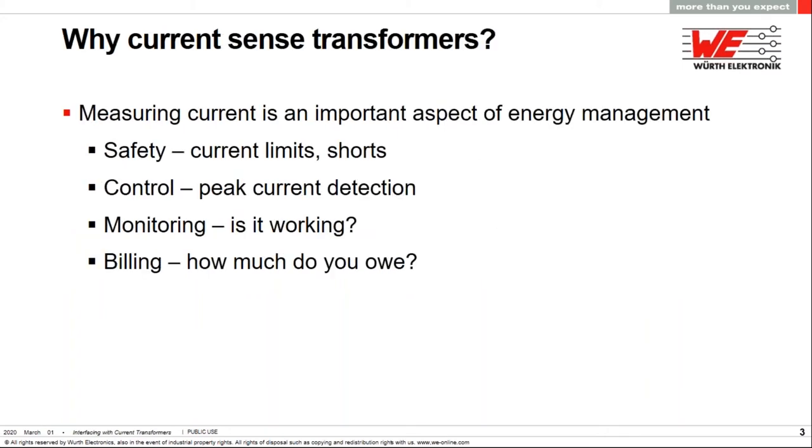So why should we use a current transformer? Measuring current is a very important part of energy management. There are many ways to use them, and each one places different demands on the performance. One reason is safety, and by this I mean detecting current limits. These could be caused by overloads or short circuits, and a power system needs to respond in a controlled manner, typically by opening the circuit. In this type of application, the current transformer needs to function under adverse or fault conditions, so it should not saturate.